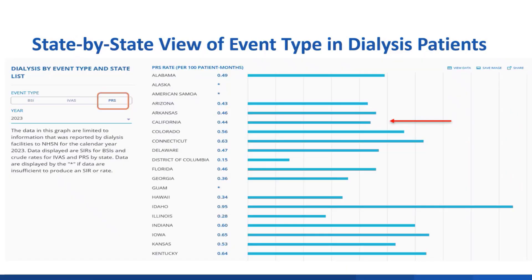The next section is a different look at the geographical location and again has the three events and five-year options. But this time, the selection is a line bar graph for the estimate, allowing one to see several states or territories simultaneously. For this, we can see PRS in California is 0.44 — the same value of 0.44 per 100 patient months we saw on the previous slide with the pop-up when looking at the state of California.